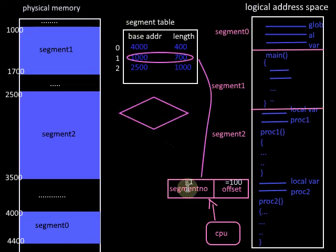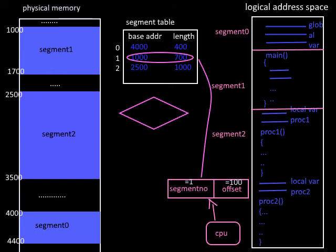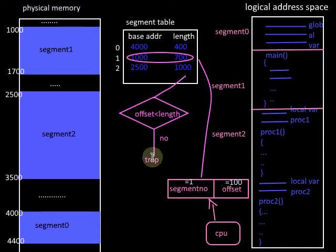The segment number is equal to 1, and the entry corresponding to segment number 1 shows a base address of 1000 and a length of 700. First of all, we should check whether this offset is within the limit — that is, whether the offset is less than the length of the segment. If it is not less than the length of the segment, it means it is not a valid address, and it will create a trap to the operating system.